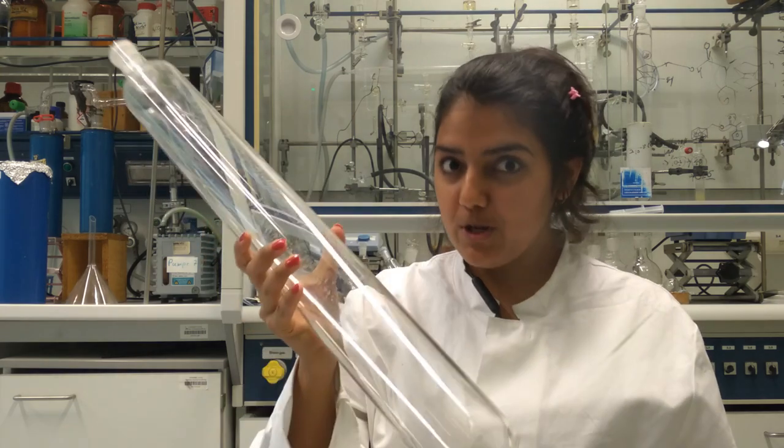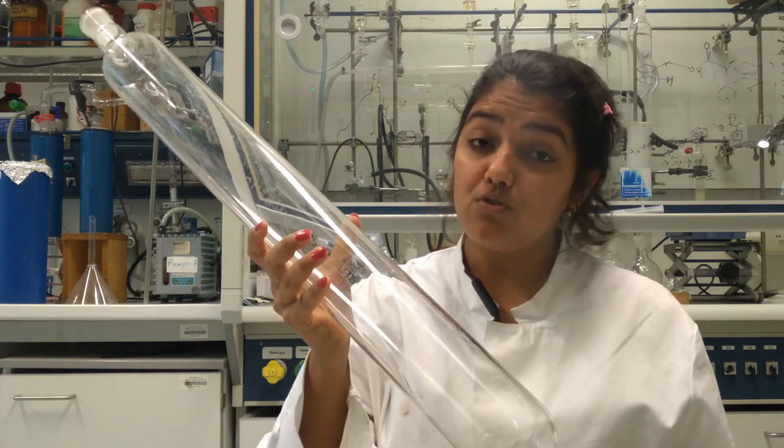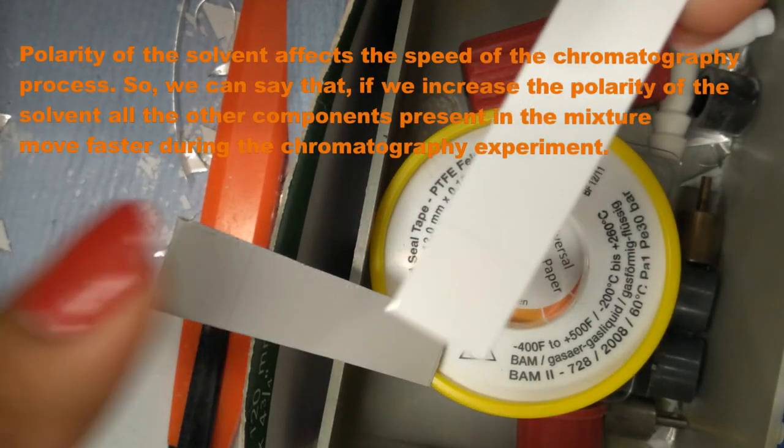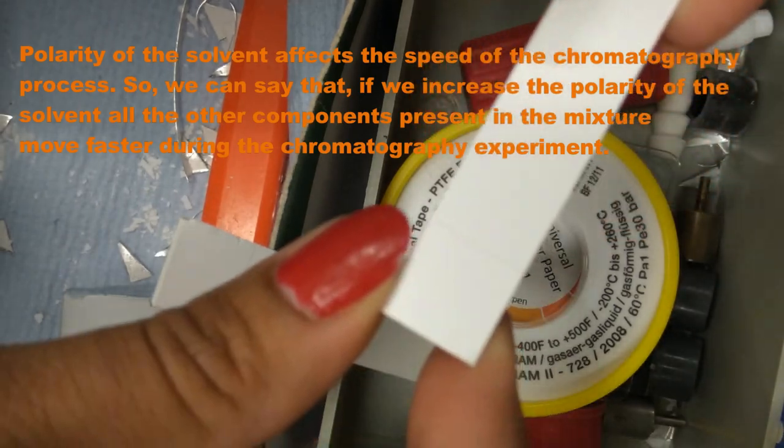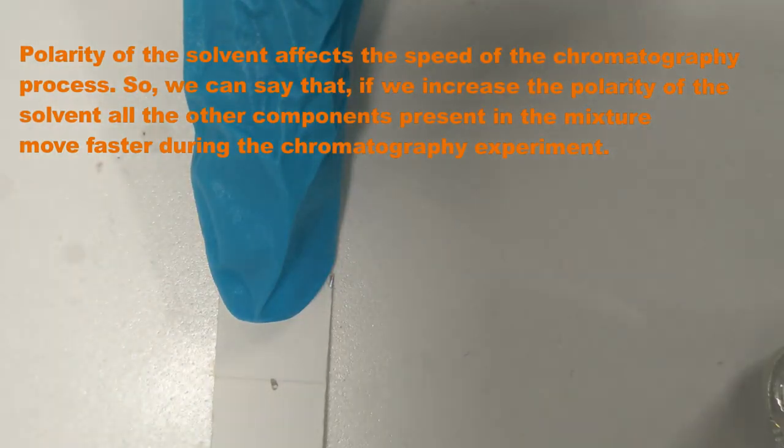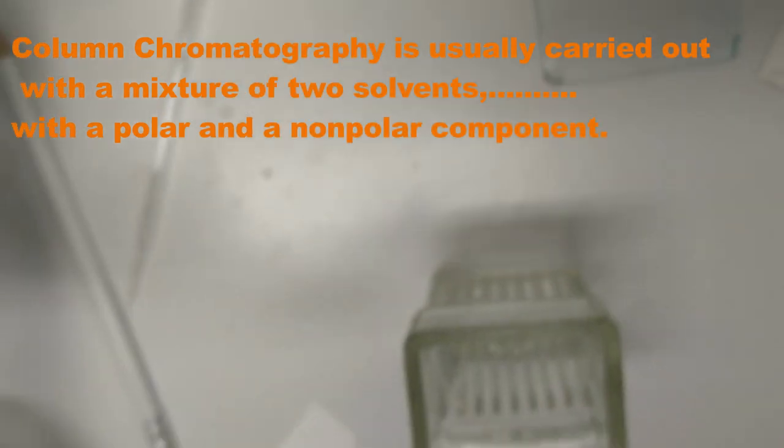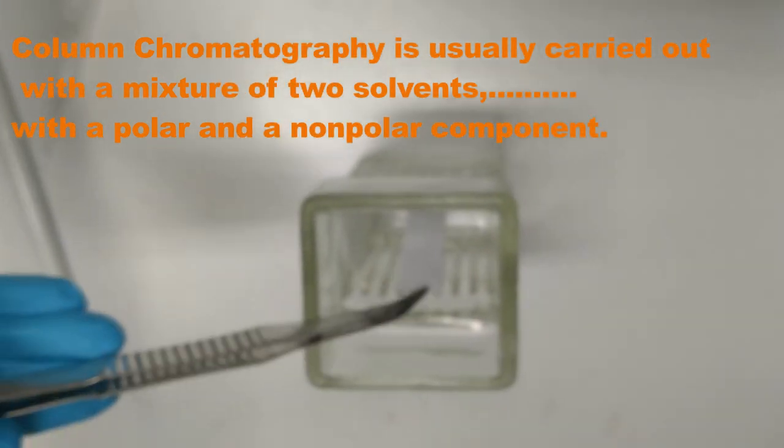All these depend upon the polarity difference and the amount of pure compound, of course. Because column chromatography is carried out with a mixture of two solvents with a polar and non-polar component. That's why we need to prepare TLC before starting column to get an idea about the solvent ratios which we are going to use further for column chromatography.